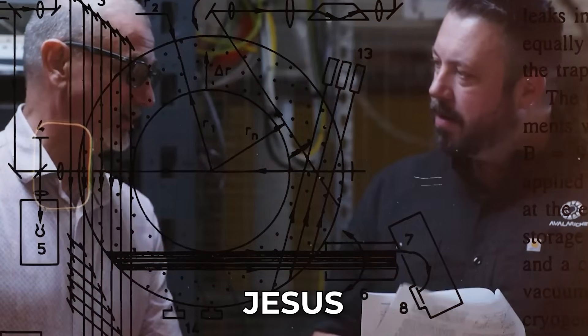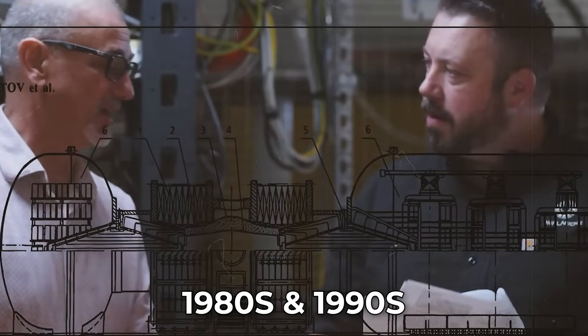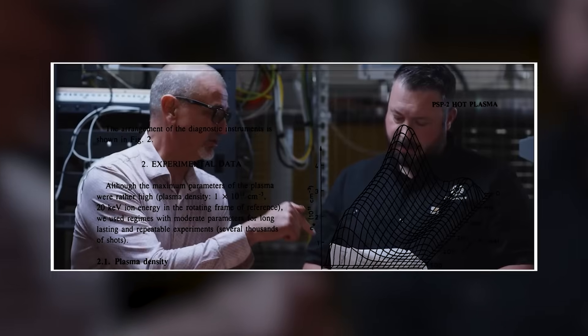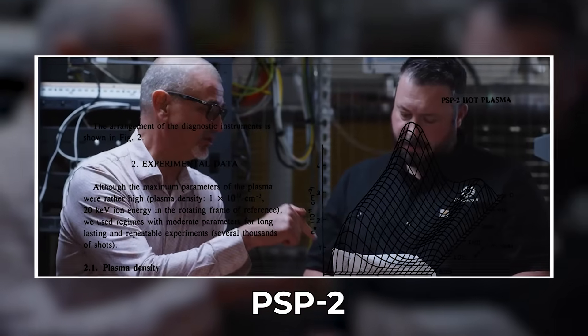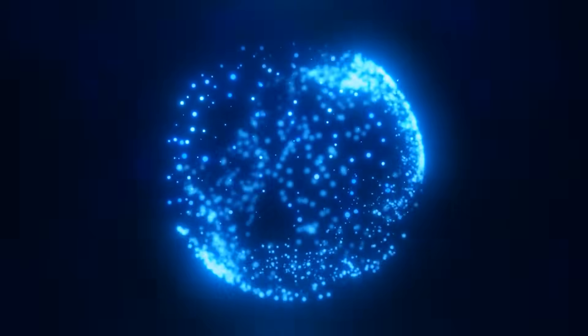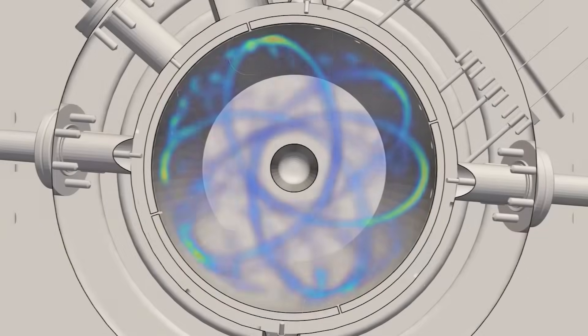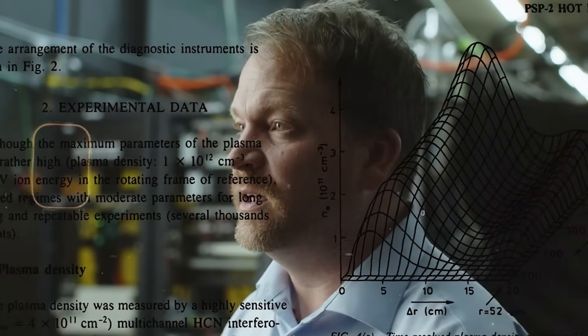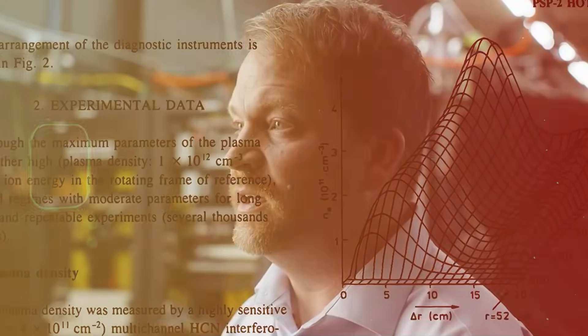At the same time, a teammate named Jesus pointed them to Russian experiments from the 1980s and 1990s, including one called PSP2. Those experiments used strong current pulses to spin plasma quickly, and the shear broke up the turbulent mode. Suddenly, Avalanche had both a theory and an old proof that it could work.